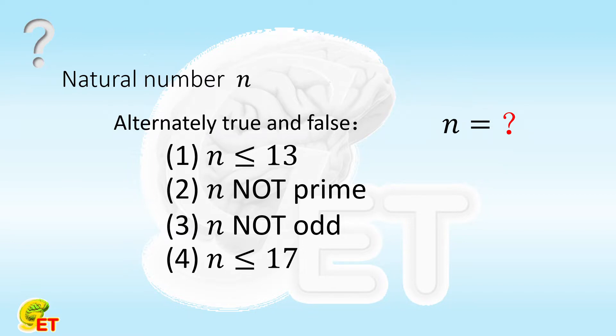If we assume that statements 1 and 3 are true, from n is not bigger than 13, we can however conclude that n is also not bigger than 17. That is, if statement 1 is true, then statement 4 must be true as well. So this assumption itself is wrong.